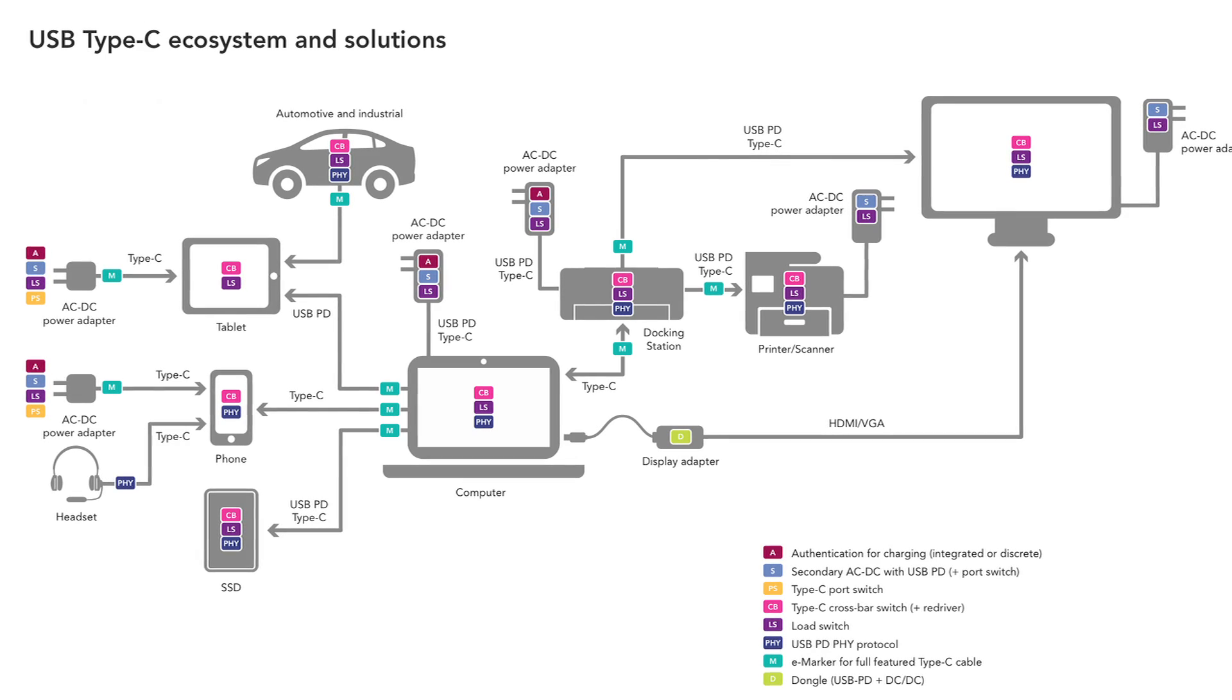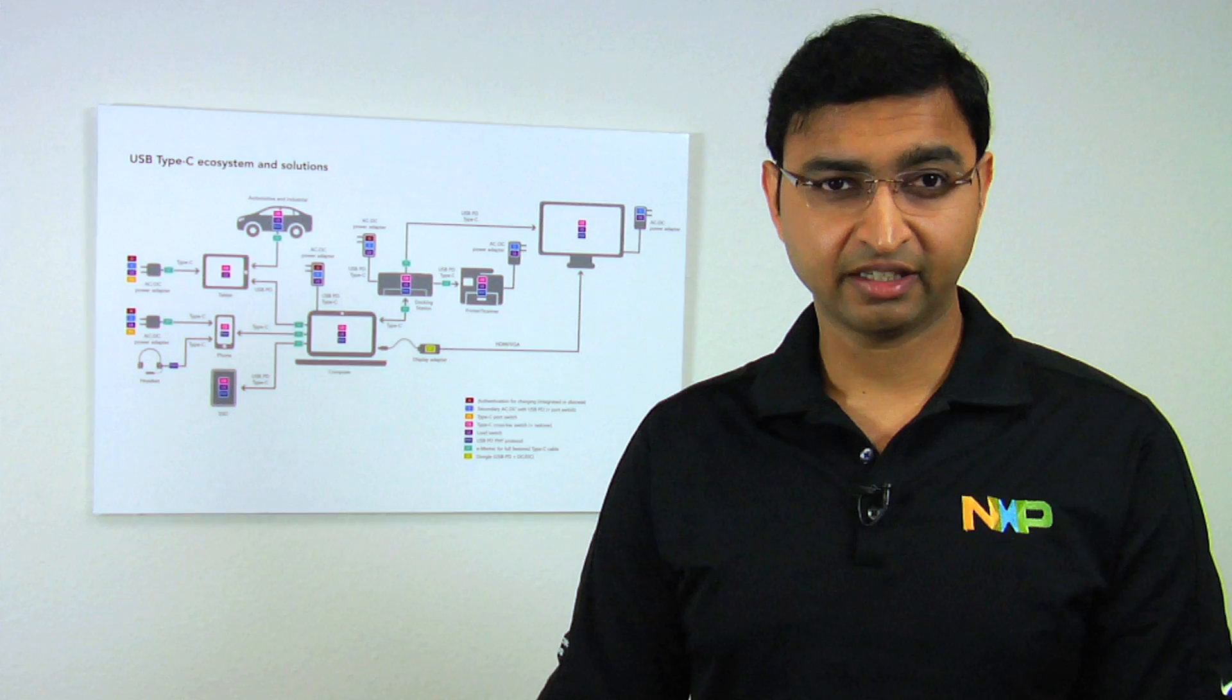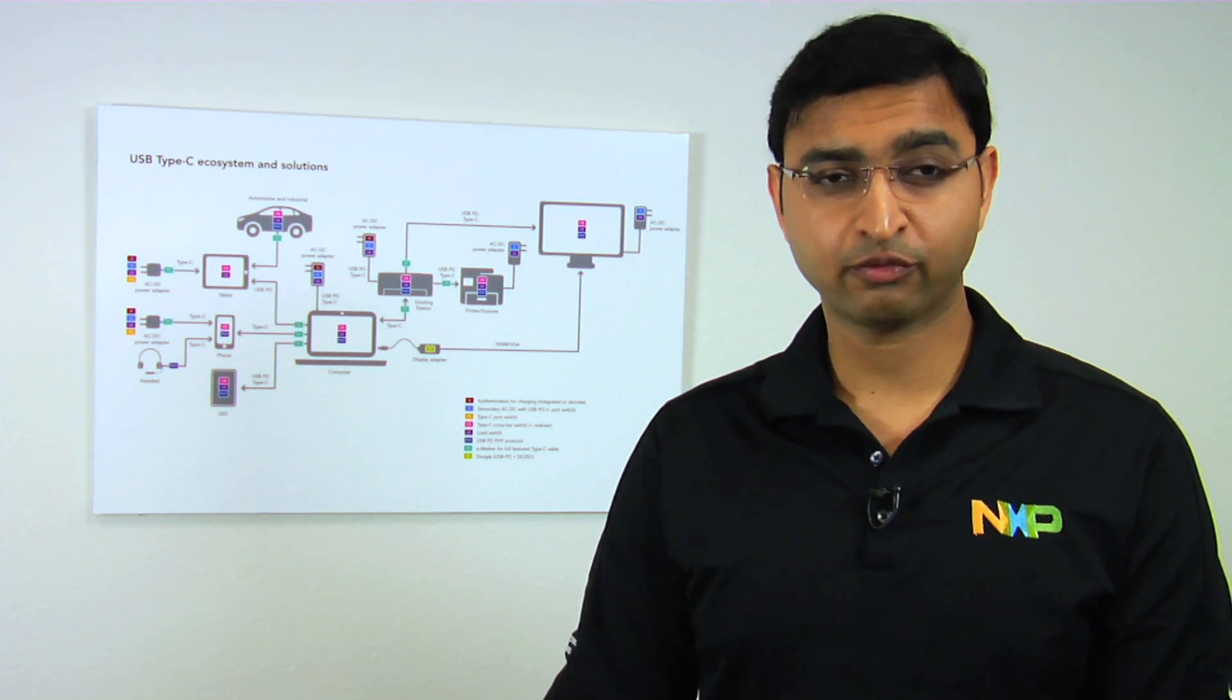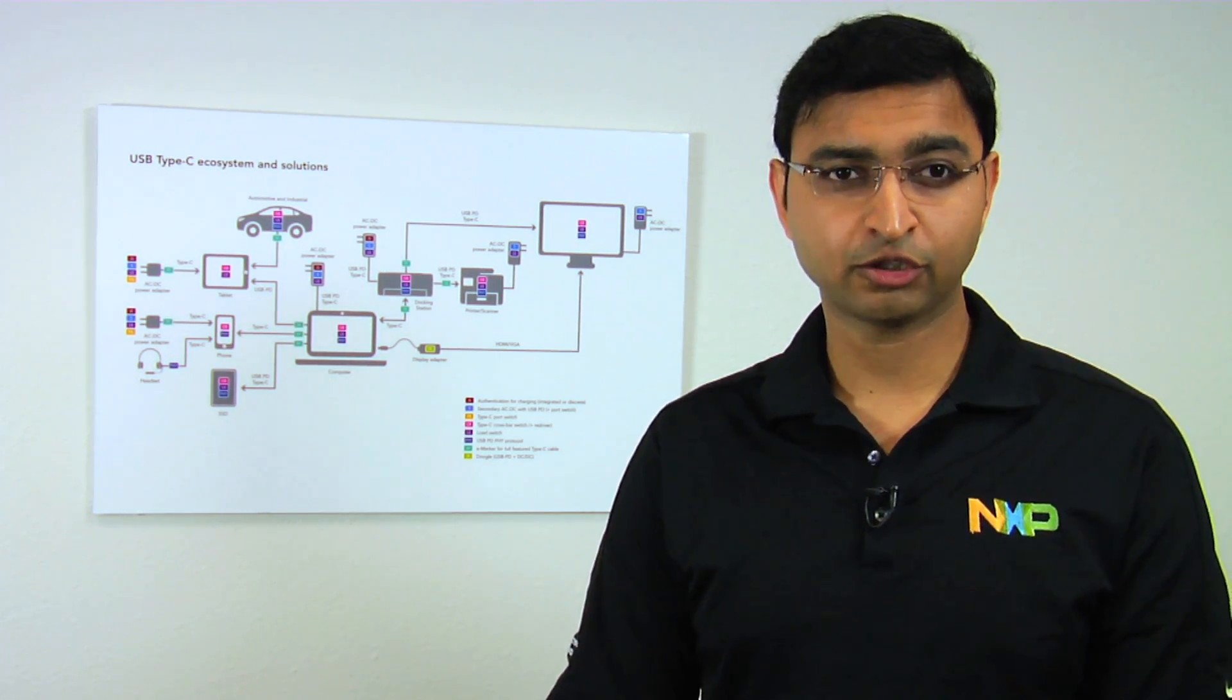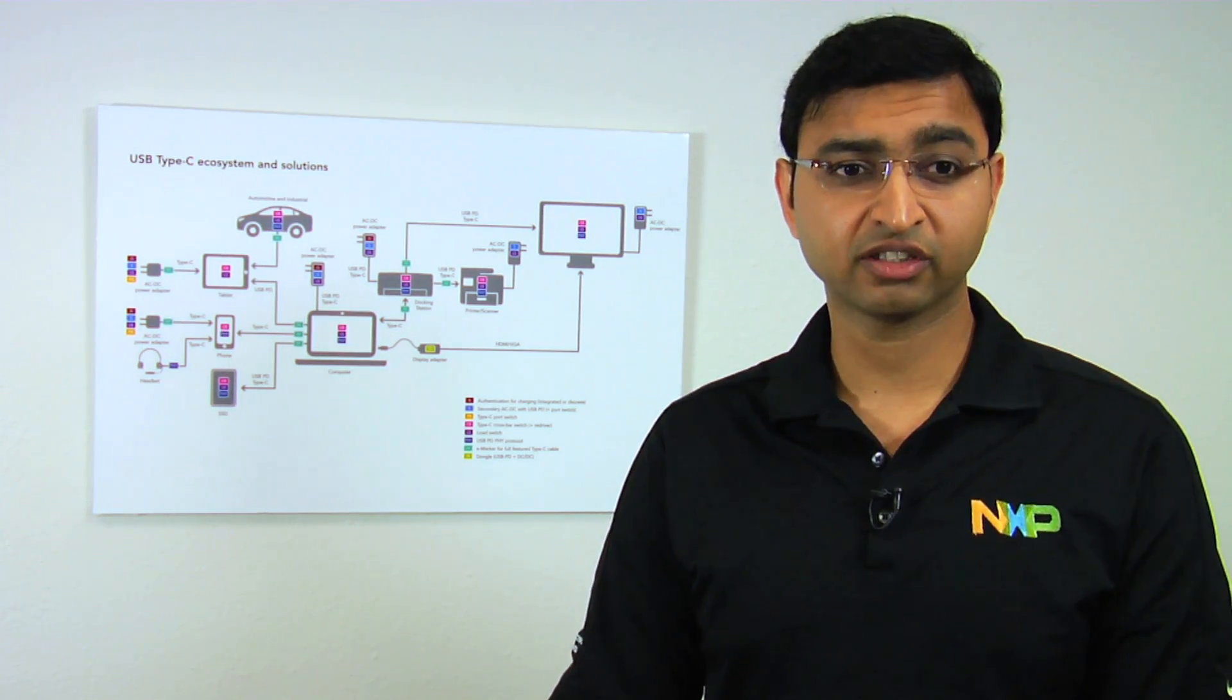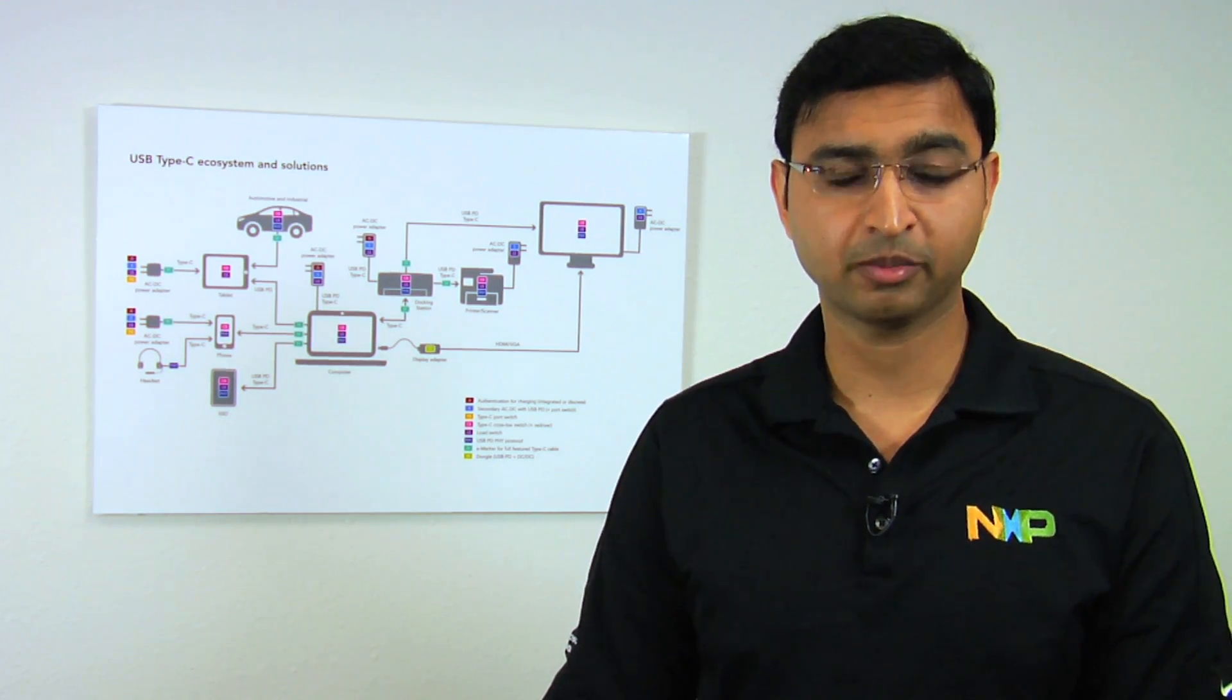So USB Type-C and power delivery can support up to 100 watts scalable charging with the help of 20 volts at 5 amps. Hence, you need extra port protection to be able to protect your device. This is where load switches and authentication solutions can come in.